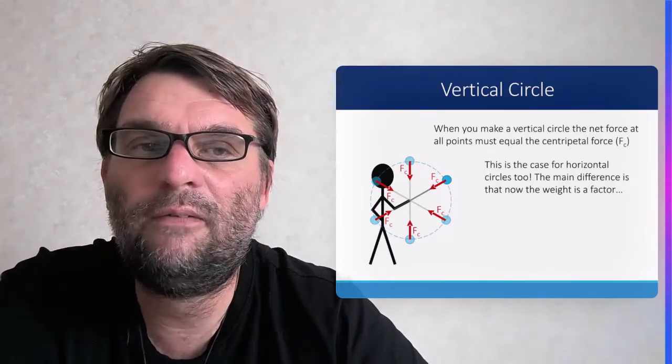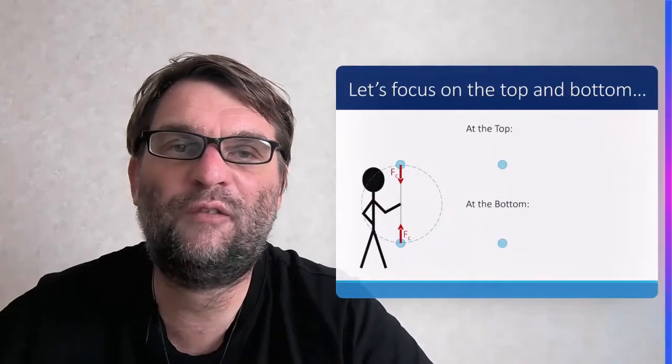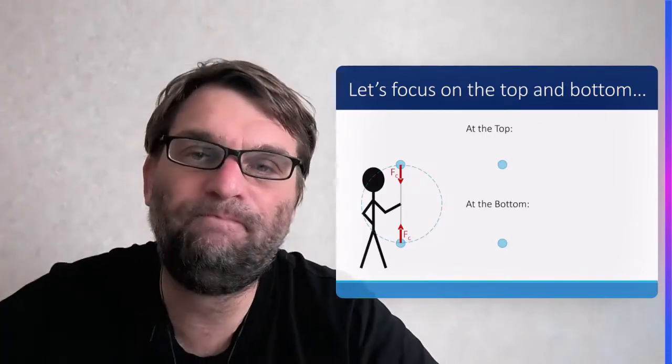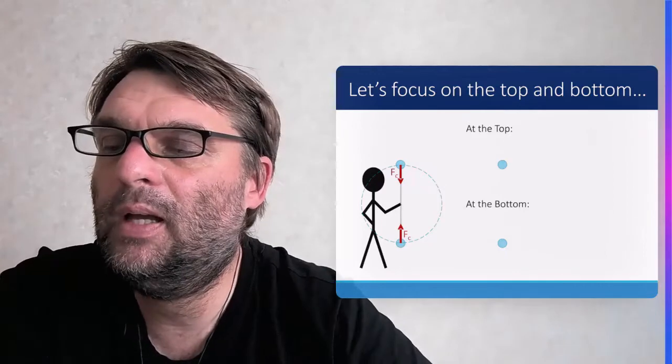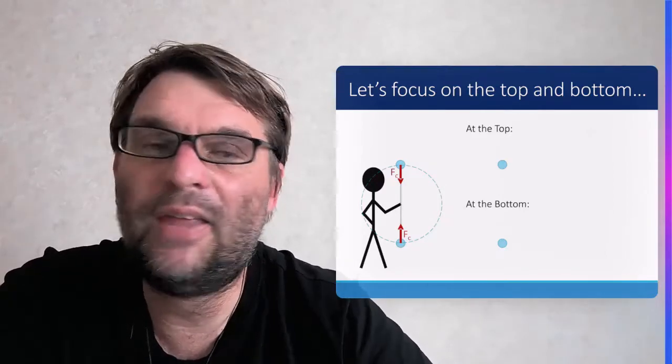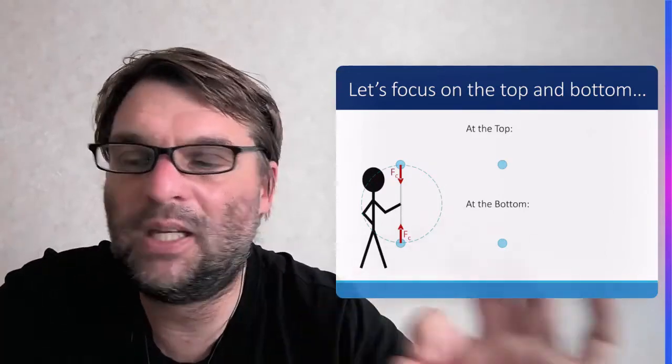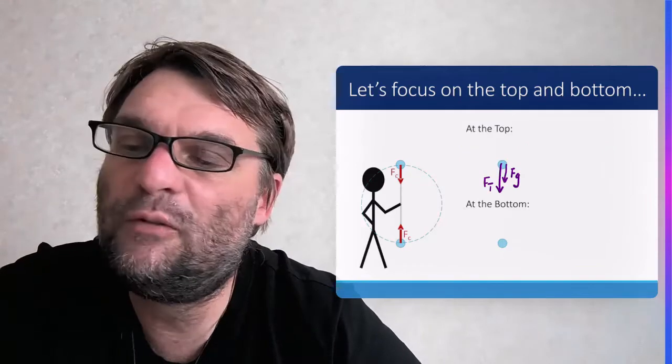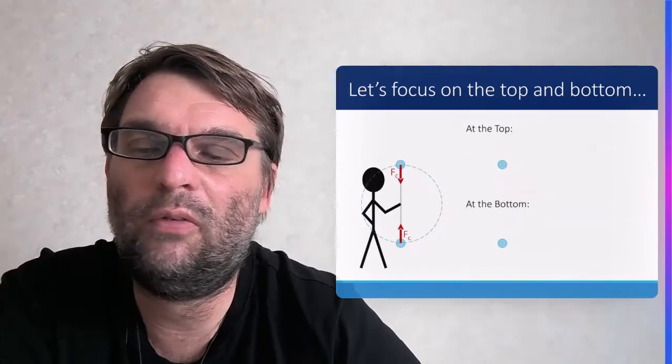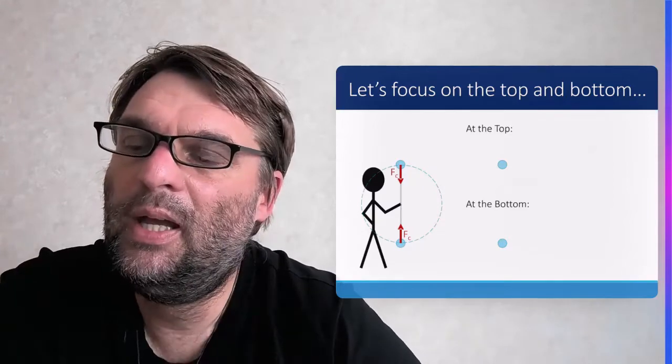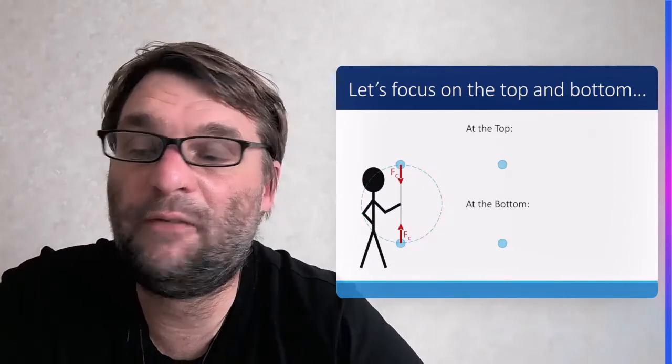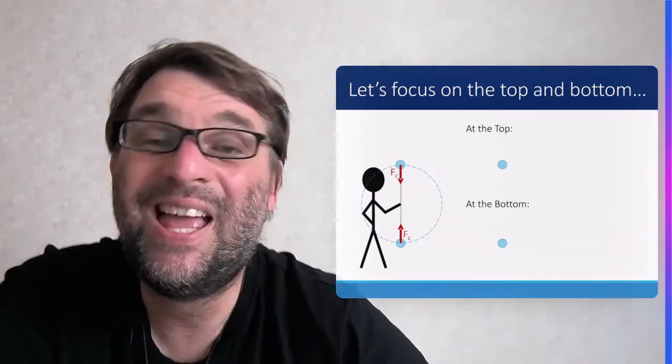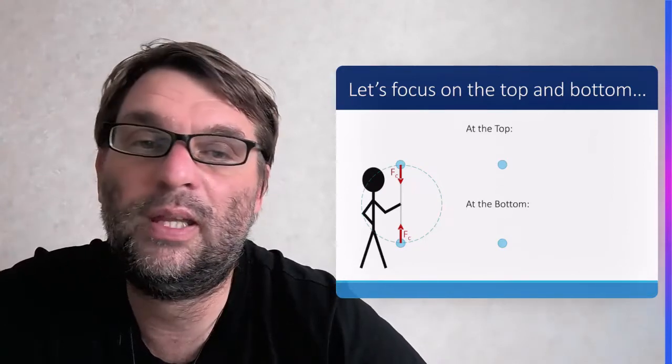Let's focus on the vertical circle and what's happening at the top and bottom. At the top, the force equals the centripetal force, which is the sum of tension and gravity. At the bottom, the net force equals the centripetal force, which equals tension minus the force of gravity.